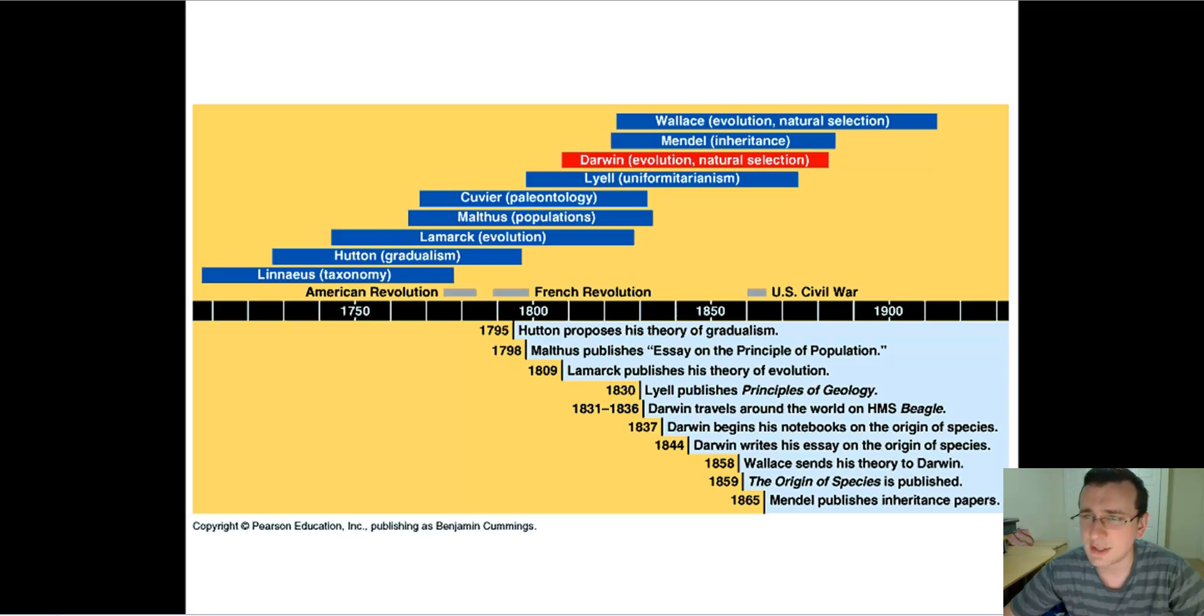Then we had Cuvier, a paleontologist studying the fossil record. He understands the earth is very old and that animals go extinct when they cannot cope with rapid environmental changes called catastrophes.